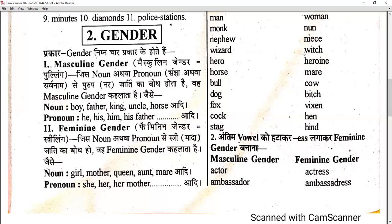Masculine gender basically refers to the male category. Examples of masculine nouns are: boy, father, king, uncle, horse, etc. And when we move to the pronouns section, we see he, his, him, etc. So all these nouns and pronouns belong to the masculine gender.